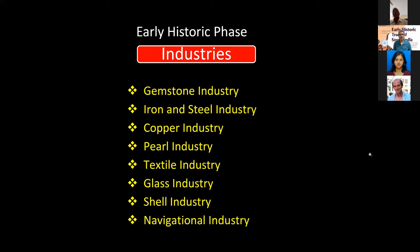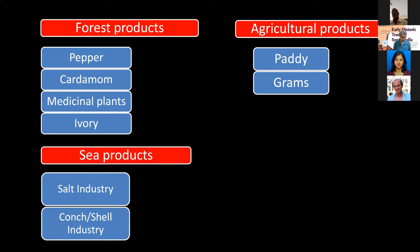Besides manufactured goods, there are natural products like pepper, cardamom, medicinal plants, and ivory — we are getting these in our excavation and in other parts of the country. Even in Egypt, we are getting ivory objects exported from South India. Sea products like salt and shell have moved from the coastal region to interior parts. From the Porundal excavation, we collected 2.5 kilos of paddy intact from a four-legged jar kept in the burial chamber, used as grave goods, along with other grains.